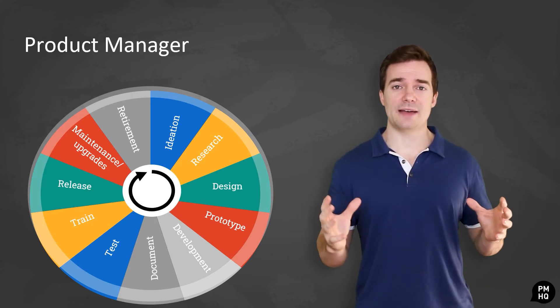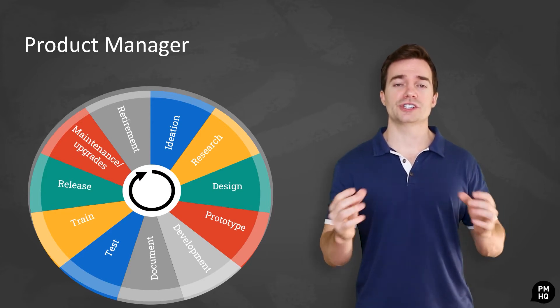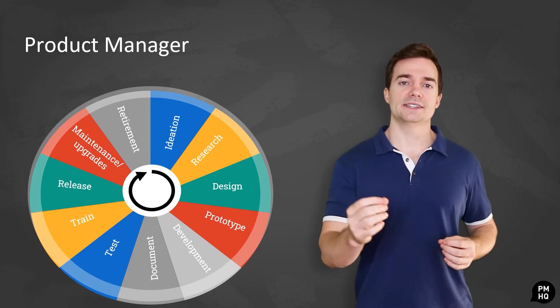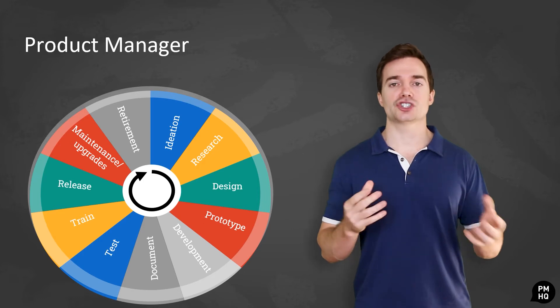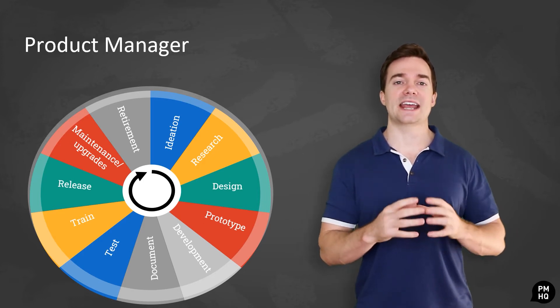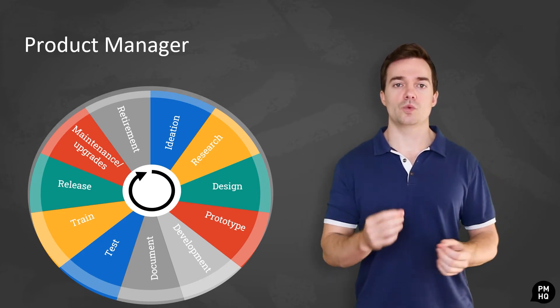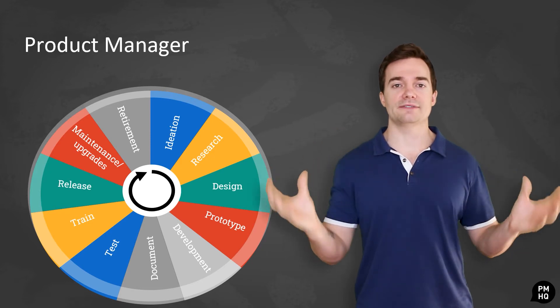That said, it usually contains as many as 11 steps, namely ideation, research, design, prototyping, developing, documenting, testing, training, release, maintenance, and ultimately retirement, which signals the end of a product's lifecycle.